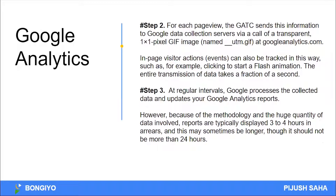The second step. For each page view, the GATC sends this information to Google's data collection server via a transparent one-pixel GIF image at googleanalytics.com. In-page visitor actions and events can also be tracked in this way — such as clicking to start a Flash animation. The entire transmission of data takes a fraction of a second. You can click a button or see a video player event — all of this data is captured.